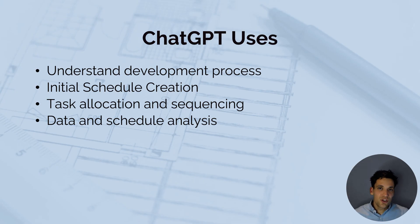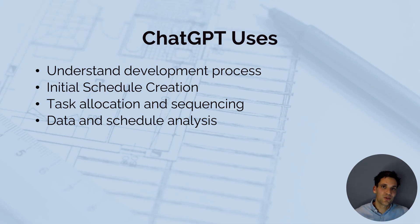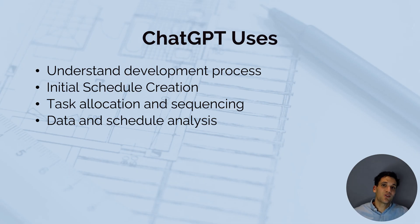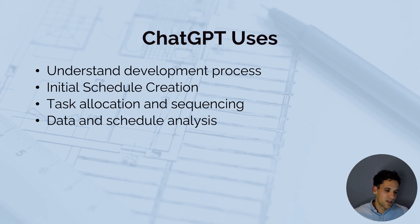Some different ways you can use ChatGPT to enhance this process include understanding the development process. Scheduling is quite a technical activity — there's a lot of different terminologies and project management processes you should use to develop a schedule. ChatGPT can be useful to understand these processes, with the initial schedule creation, and once you move into project delivery, allocating and sequencing tasks. During construction, when you're monitoring and controlling the schedule, you can also use ChatGPT to help with data and schedule analysis.